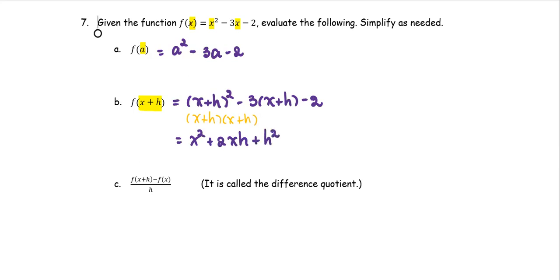For the second term, multiply both terms by negative 3 to get negative 3x minus 3h, and then minus 2. So we obtain the expression for the function at x plus h.